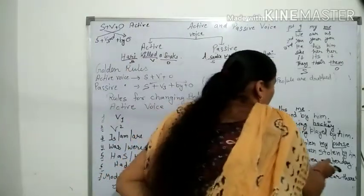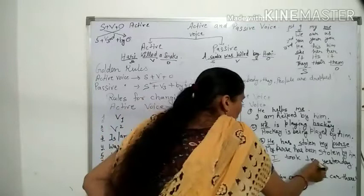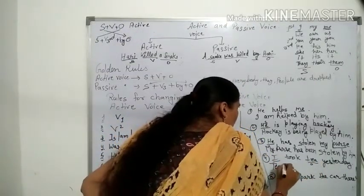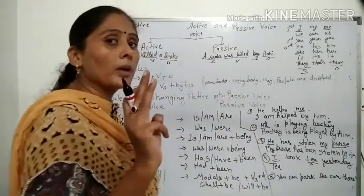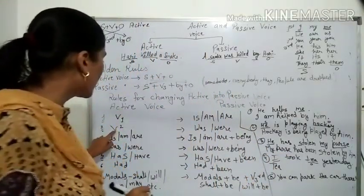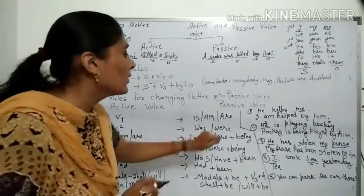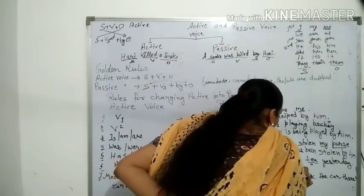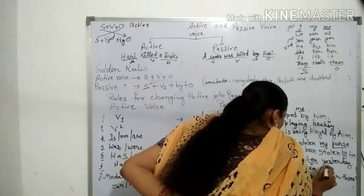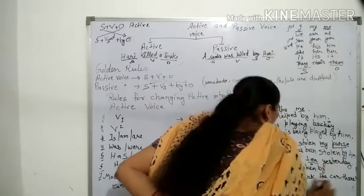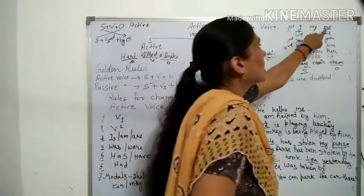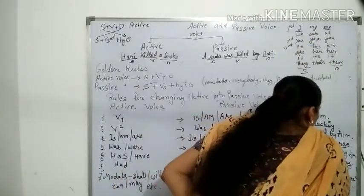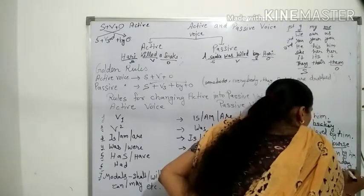Example: I took it yesterday। I subject है, it object है। 'Took' verb की second form है — second form 'was/were' में change होती है। It singular है तो 'was' आएगा। It was taken — 'taken' है taken की third form। By के बाद I subject है तो object 'me' बन जाएगा। Final sentence: It was taken by me yesterday।